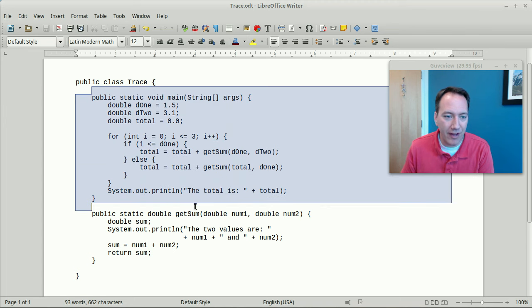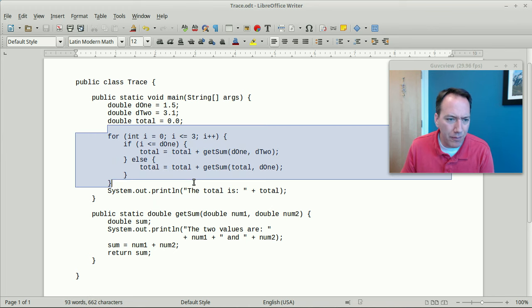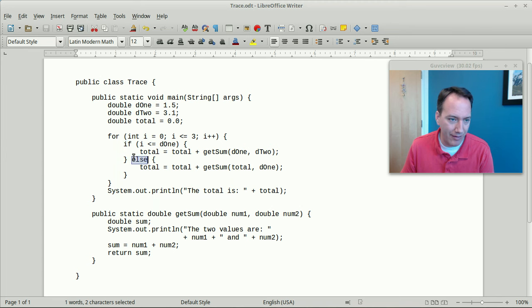Before doing so though, let's just take a look at what the code does overall to understand the structure. So you can see here I have a class that has two methods, main and getSum. And there's a loop here in the main method that's going to call the getSum method in either case of an if statement.